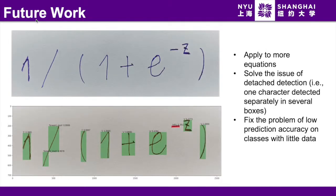In the future, we will test our model on more equations. We have already tried the sigmoid function, and our model also gives a good result. But the generalization for more kinds of equations is yet to be improved. Also, there is a common issue of detached detection. That is, one character may be detected separately in several boxes. The forward slash on the left is an example. We have to improve our character locating algorithm to solve it.